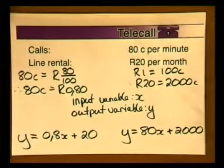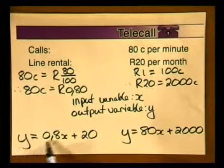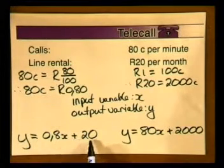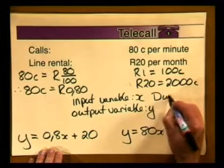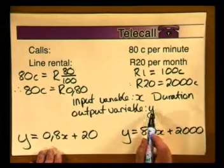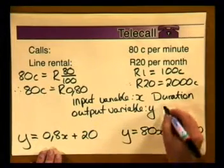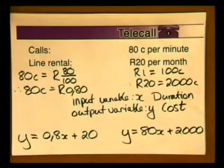Working with tables of values can become very cumbersome. It makes far more sense to find a shortcut, and the formula represents one such shortcut. In our telephone costs example, the formula is y = 0,8x + 20, where x represents the input variable — the duration of the calls — and y represents the output variable — the total cost of using the telephone. All the values we could put in a table are packaged in this one short, neat formula.